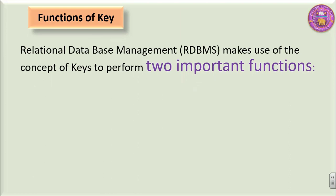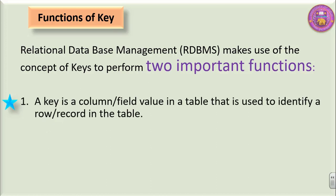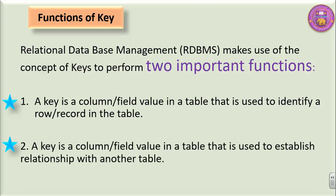Functions of Key: A key is a column or field value in a table that is used to identify a row or record in the table — this is the first important function. The second important function is that a key is a column or field value in a table that is used to establish a relationship with another table. These are the two important functions performed by keys.